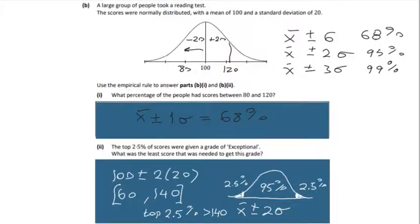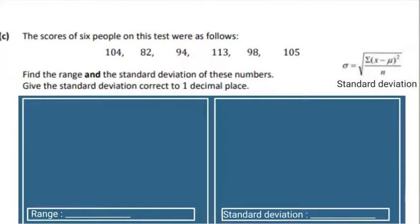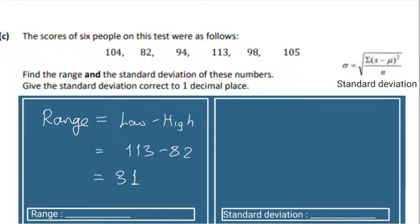Let's go on to part C now. We have to work out the range and the standard deviation from this data set. The range is equal to the lowest minus the highest, so the highest is 113 minus 82, and that will give us a difference of 31.